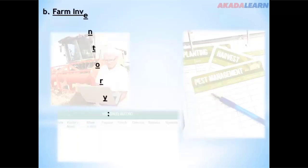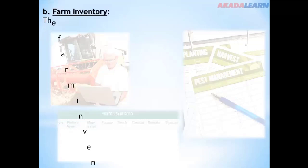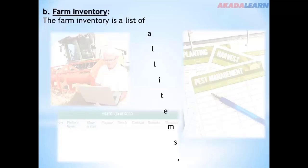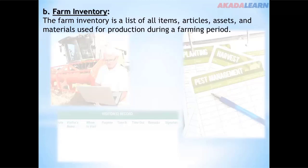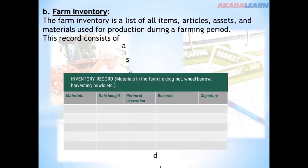The next type is the farm inventory. The farm inventory is a list of all items, articles, assets, and materials used for production during the farm period. This record consists of assets and liabilities.